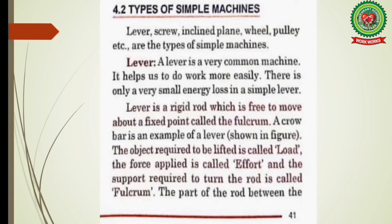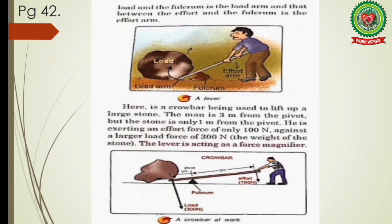Now come to page 41. Types of simple machines: lever, screw, inclined plane, wheel, pulley, etc. A lever is a very common machine that helps us do work more easily with very small energy loss. A lever is a rigid rod free to move about a fixed point called the fulcrum. A crowbar is an example of a lever. The object to be lifted is called the load, the force applied is the effort, and the support to turn the rod is the fulcrum.